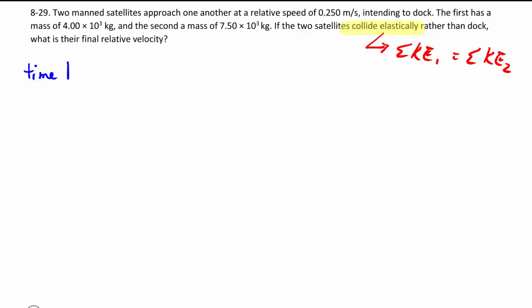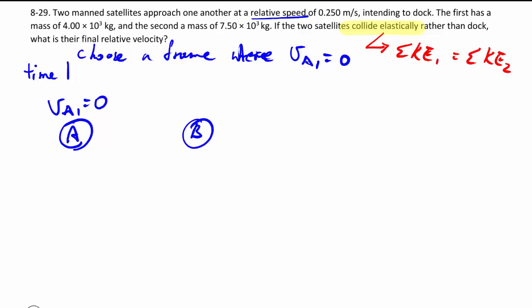So let's draw a picture of time one and time two before and after the collision. They give us a relative speed, so we have our choice of choosing whatever non-accelerating frame. We're going to explicitly choose a frame where satellite A is not moving. So VA1 is equal to zero to begin with. A, this is a satellite but I'm just using a ball-like thing. VA1 is equal to zero as defined.